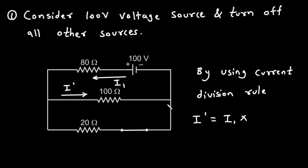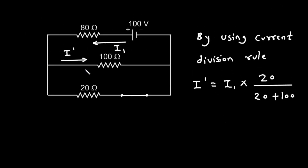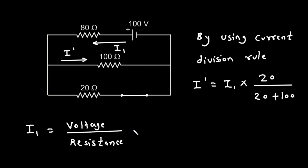The 20 ohm is connected in parallel to the 100 ohm, so it will be 20 divided by (20 plus 100). Since we don't know I1, we need to find it first. I1 equals voltage divided by resistance, according to Ohm's law. The voltage is 100, and we need the total resistance from the circuit.